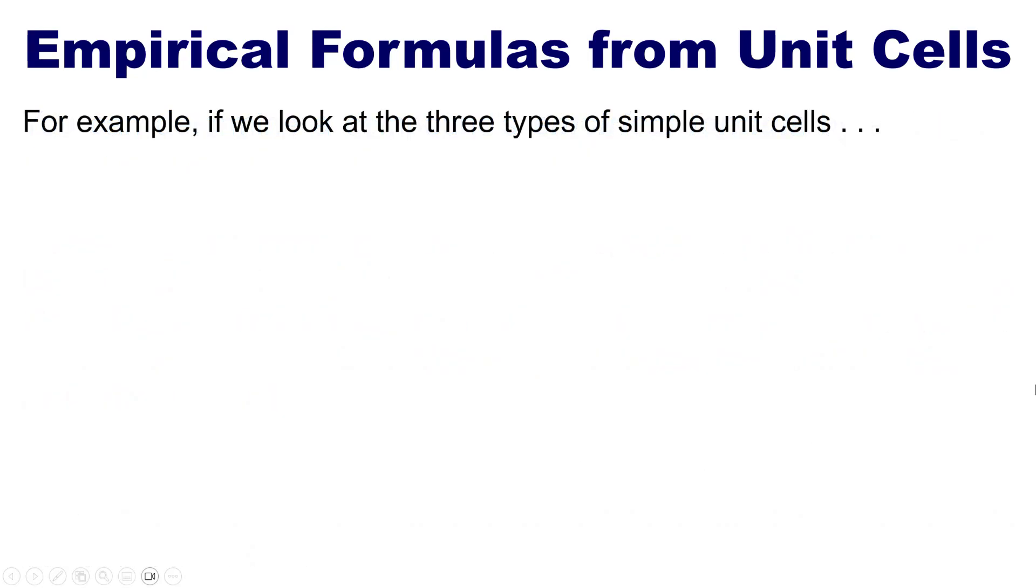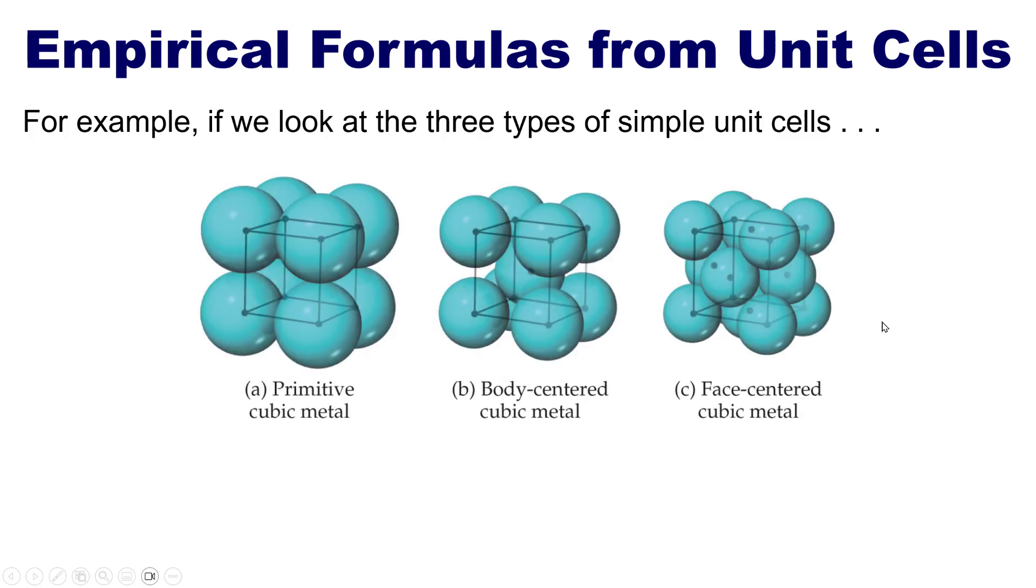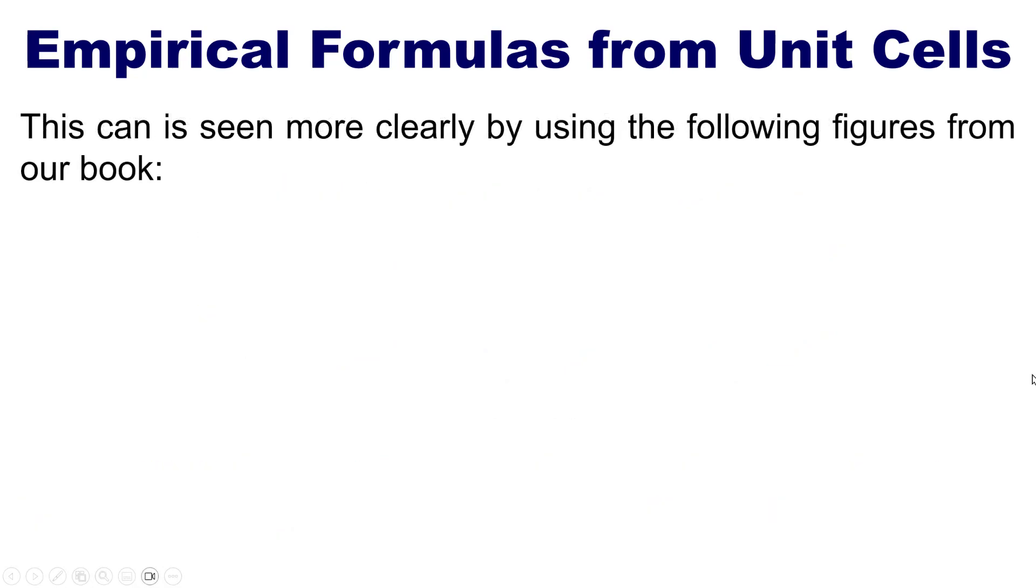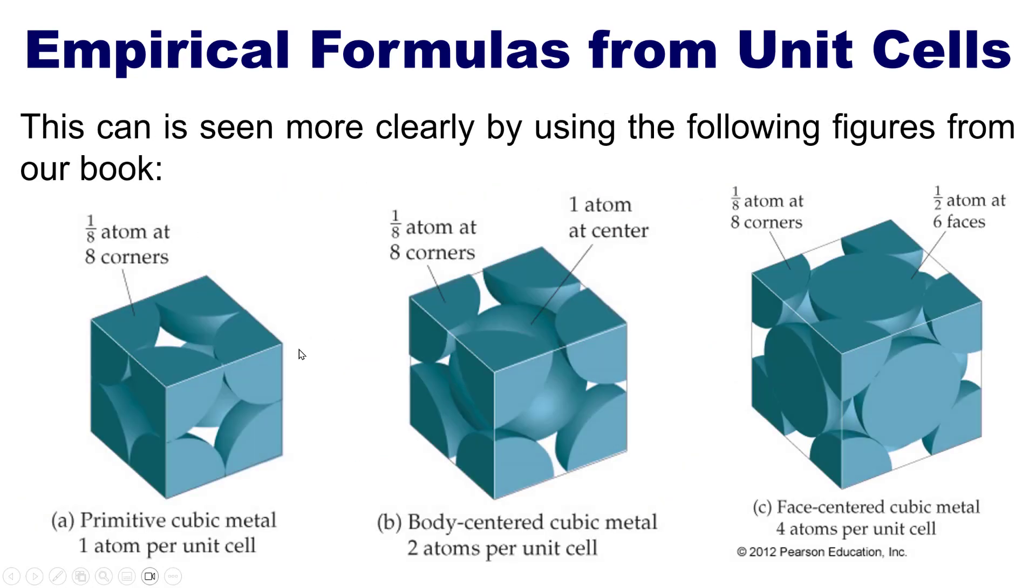For example, if you look at the three types of simple unit cells shown right here, we can see that some of the atoms, the ones along the corners or vertices, along the edges or straddling the faces of the cubes are not completely inside the cubes or boxes. This can be seen more clearly using these figures from our text, which you're welcome to pause and consider for a moment.